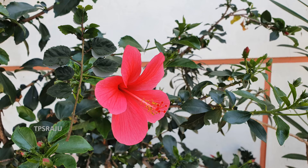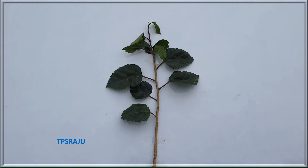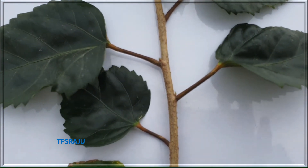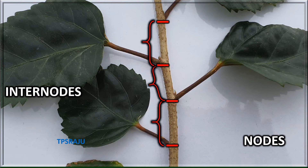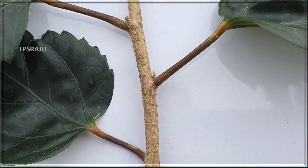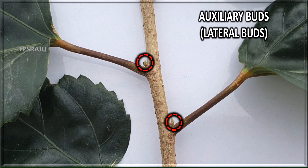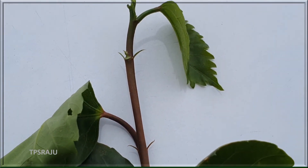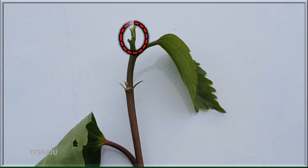Now we are going to observe the stem parts in a hibiscus plant. That's why we are collecting a stem from the hibiscus plant. Observe carefully. These are nodes. These are internodes. These are axillary buds. This is the apical bud.